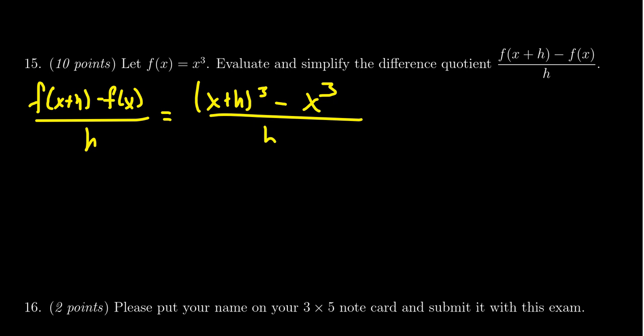Our goal is to get rid of the h in the denominator. Now for this one, how we proceed depends on the function type. As this is x cubed, we're going to have to foil that thing out.